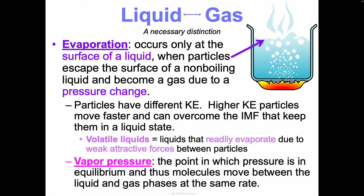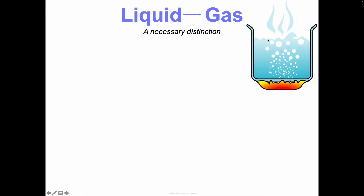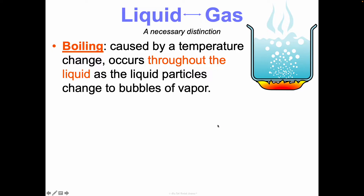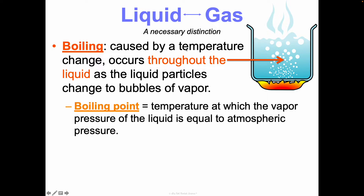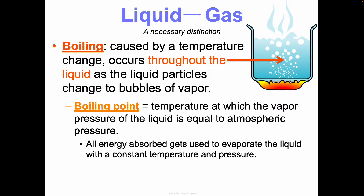Boiling is different from evaporation — it's caused by a temperature change and occurs throughout the liquid, not just at the surface, as liquid particles change to bubbles of vapor. The boiling point is the temperature at which the vapor pressure of the liquid equals the atmospheric pressure. All energy absorbed gets used to evaporate the liquid at a constant temperature and pressure.